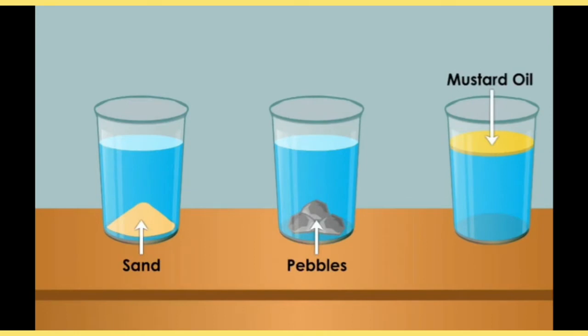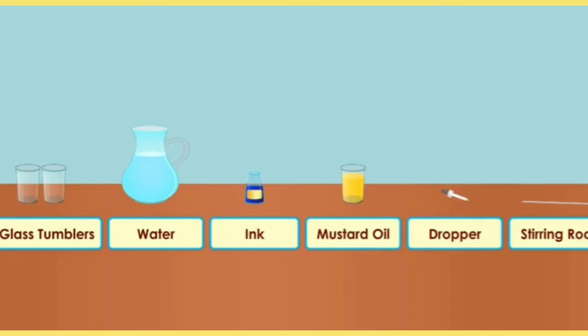When we dissolve things, you can see sand in water, then pebbles if we add small pieces in water, or mustard oil — you can see that sand cannot be dissolved in water, pebbles cannot be dissolved in water, and mustard oil cannot be dissolved in water. You can also make an experiment with water tumblers.